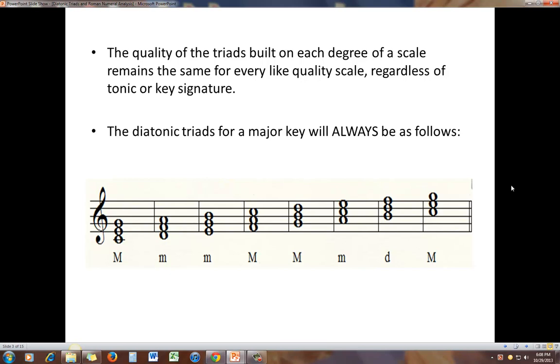The quality of the triads built on each scale degree will remain the same for every like quality scale. In other words, the pattern will be the same for all major scales, the same for all natural minor scales, etc. You might be a bit surprised to learn that all of the triads built on top of the scale tones of a major scale are not major.